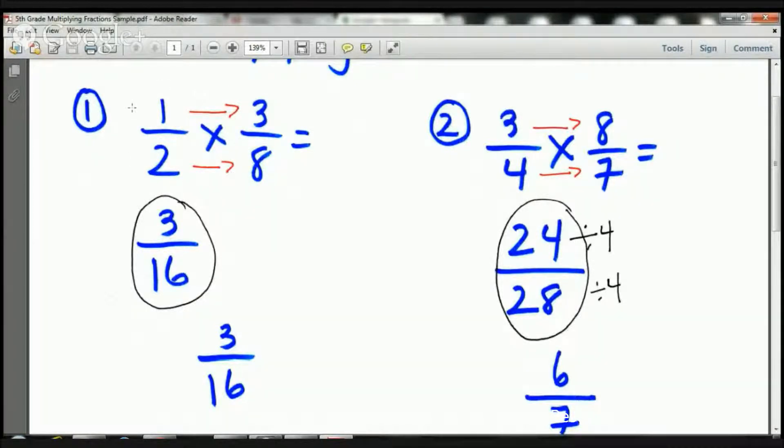Here we have one-half times three-eighths. All I need to do is just multiply straight across. So one times three is three. That's our numerator. Two times eight is sixteen. That's our denominator. So here we have three-sixteenths. Is there a way for me to reduce that? Nope, there isn't. So the answer is three-sixteenths. Was that easy or what?